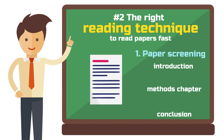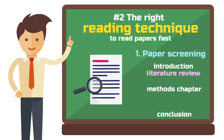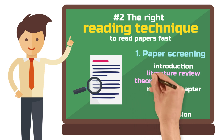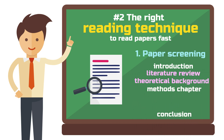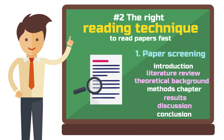If you now realize that you want to get more out of this paper, selectively decide to read additional chapters. For definitions, read the lit review. For interest in theory, read the theoretical background. To learn more about the scientific debate about a topic, read the discussion. For methodological questions and inspiration, read the results. Different papers can be useful in very different ways. You need to define the goal you have when reading a paper. This is called selective reading.